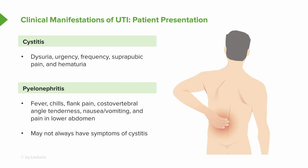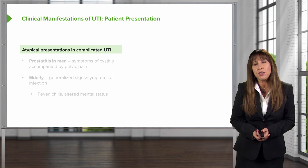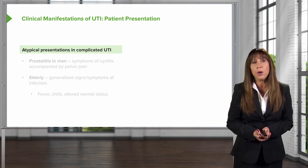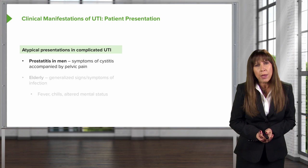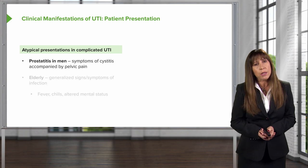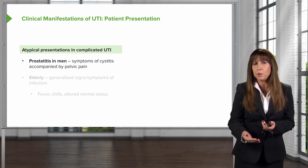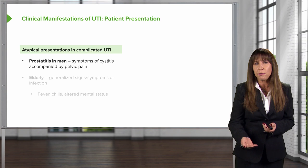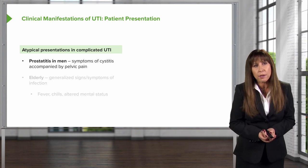Patients with pyelonephritis may not always have irritative voiding symptoms or symptoms of cystitis. There are also some atypical presentations in complicated UTI that we should be aware of. Prostatitis in men typically presents with symptoms of cystitis — dysuria, urgency, frequency to void — but oftentimes men will also complain of pelvic pain.